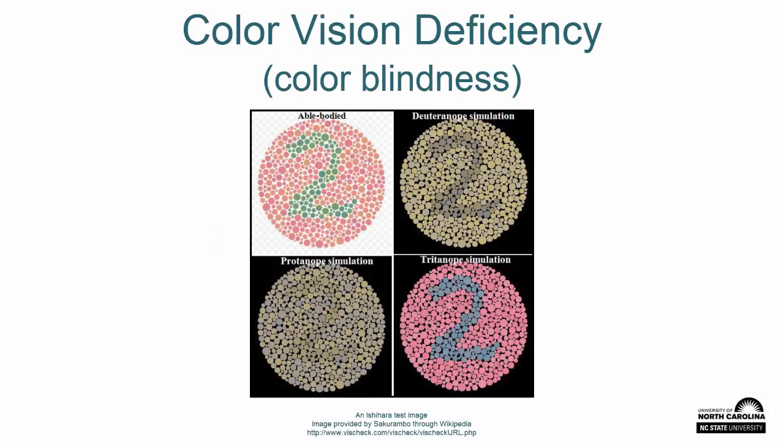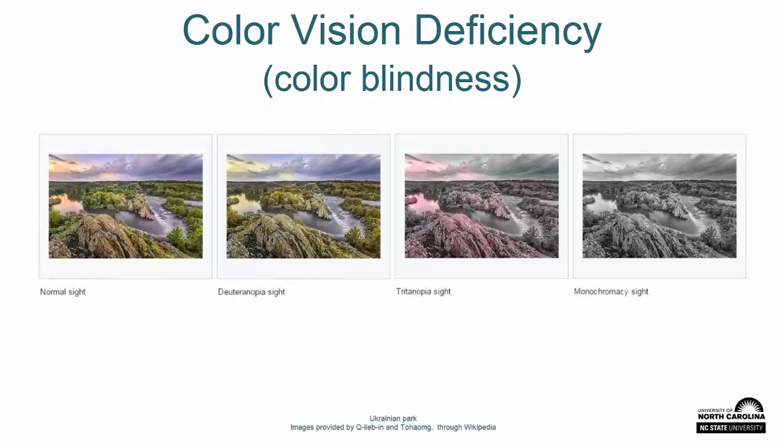It's important to note that some people have color vision deficiency or color blindness, which affects how they perceive color. To them, red, green, or blue may appear muted or appear as another color altogether.